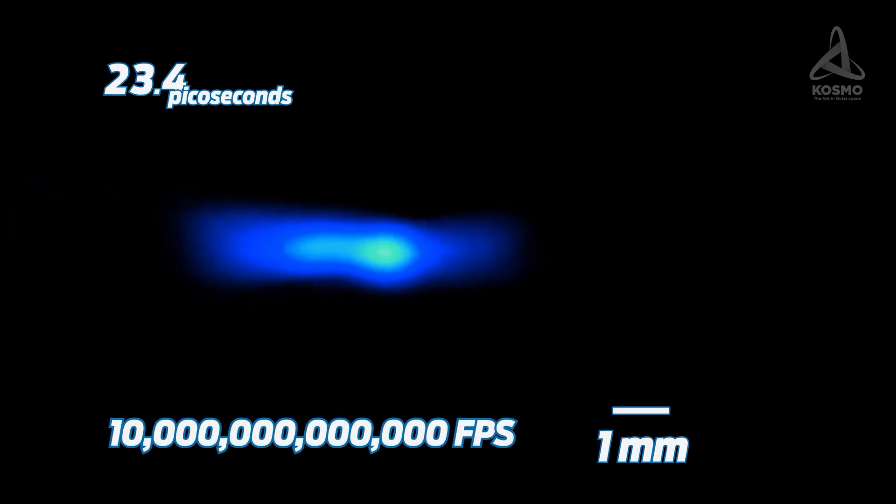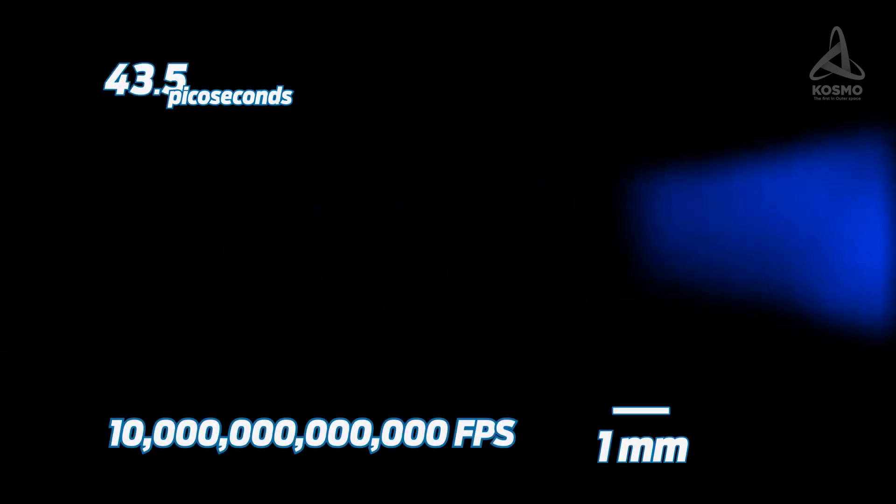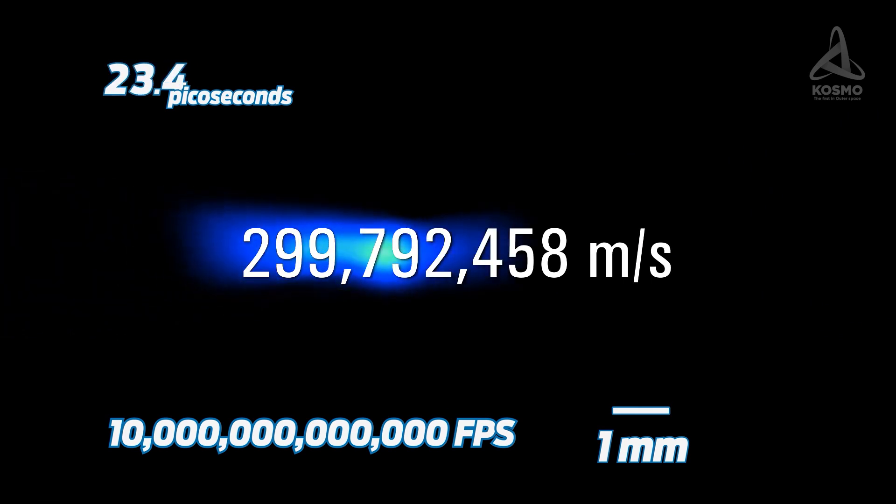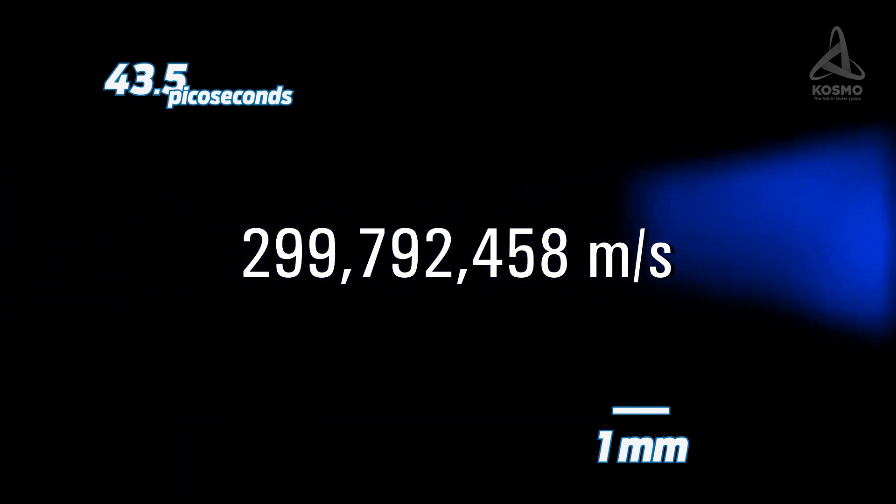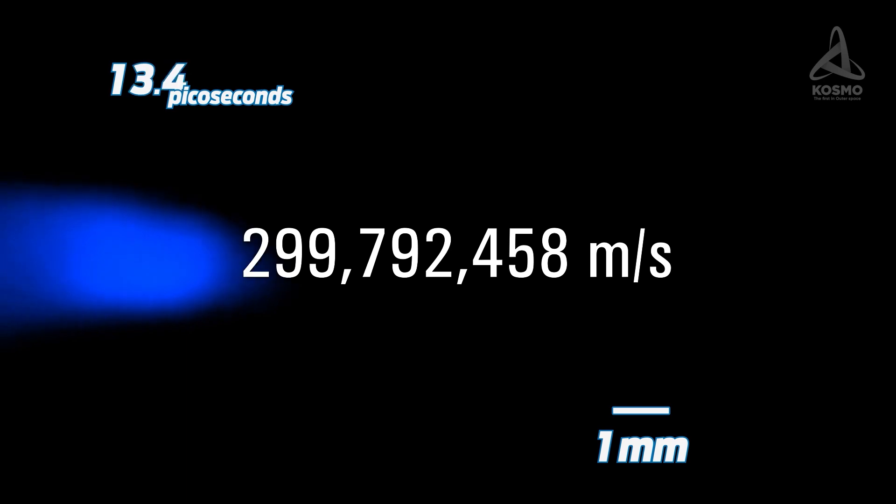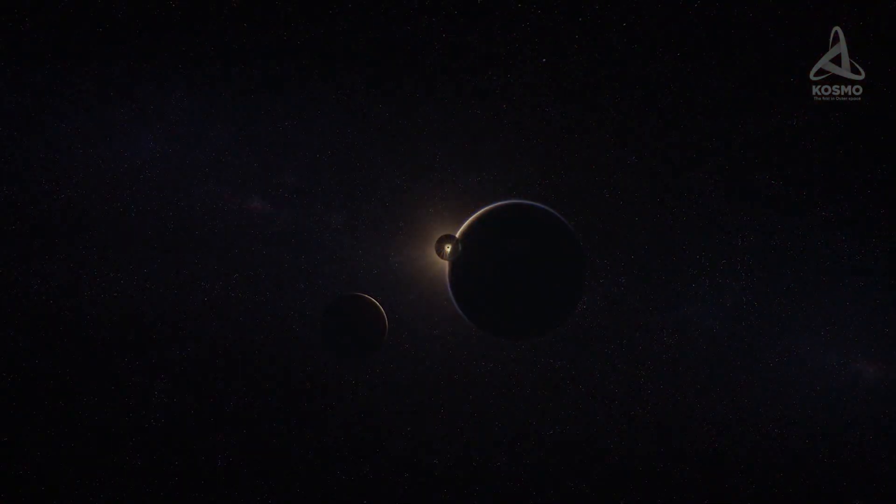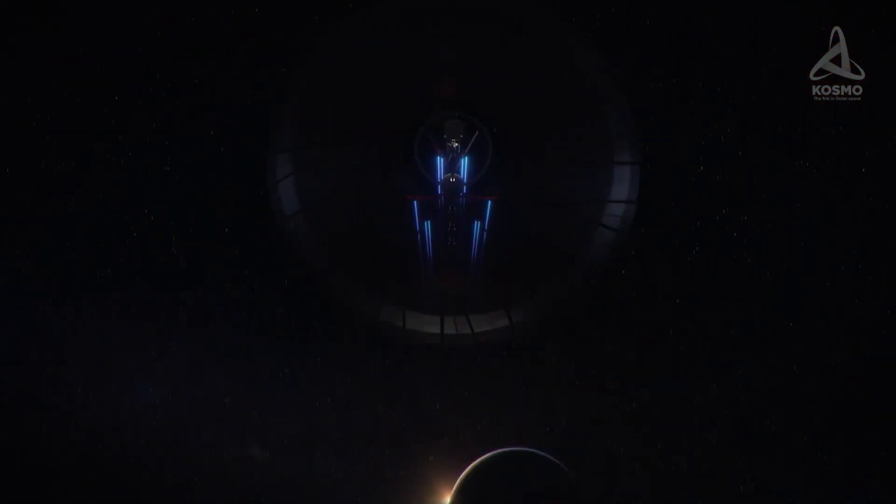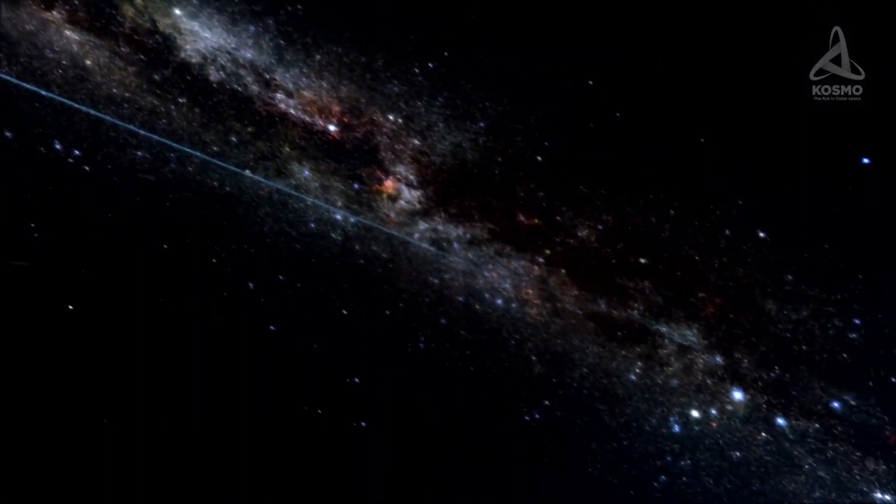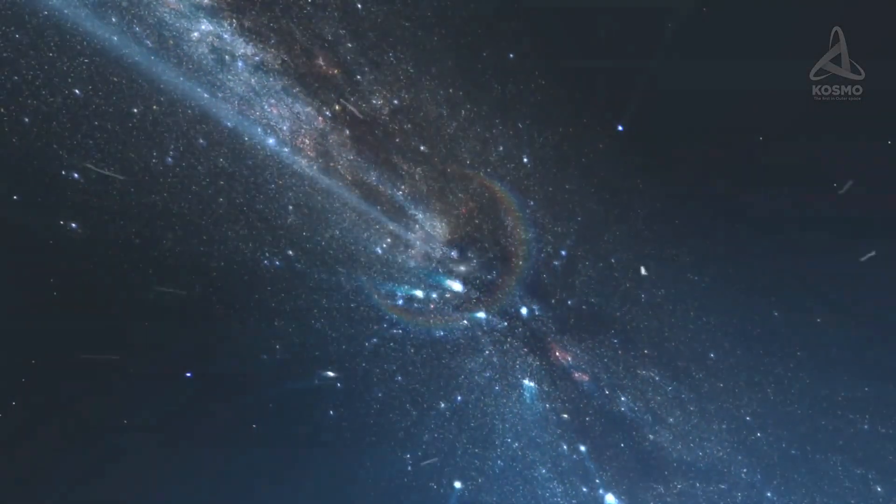Its speed is traditionally considered the limit and is a constant at 299,792,458 m per second. Any particle with a mass will never reach this speed, and any particle without a mass will always travel at this exact speed in the vacuum.